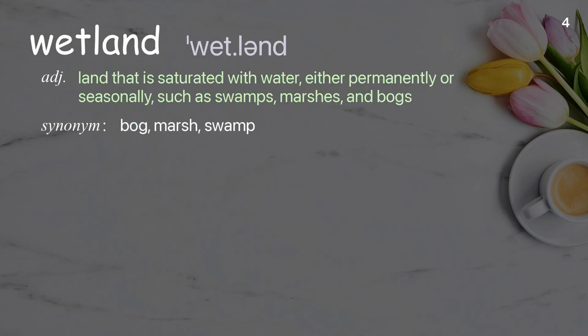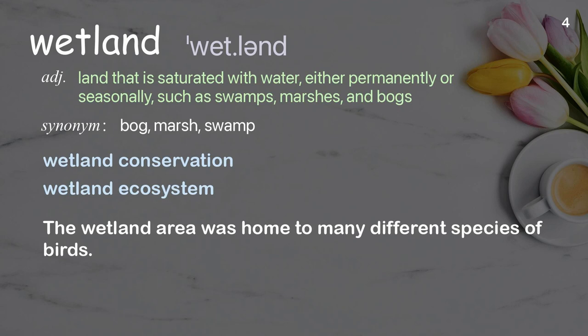Wetland: land that is saturated with water, either permanently or seasonally, such as swamps, marshes, and bogs. Examples: wetland conservation, wetland ecosystem. The wetland area was home to many different species of birds.